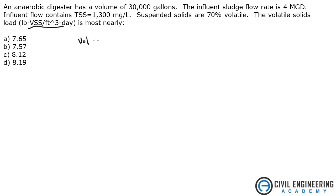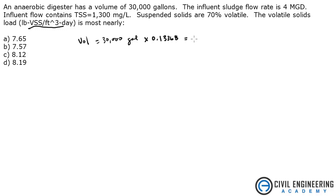We've got a volume of 30,000 gallons. If you are using the Civil Engineering Reference Manual, there is a nice conversion to get this into cubic feet. If I multiply this by 0.13368, that gives me 4010.4 cubic feet.